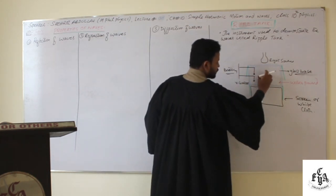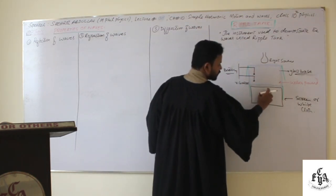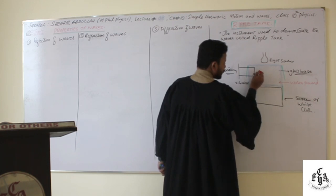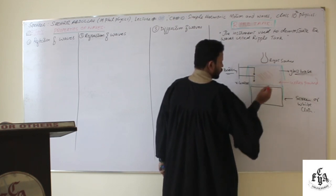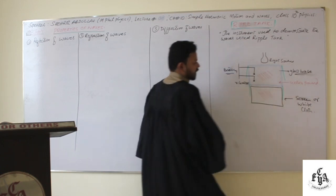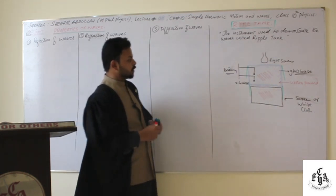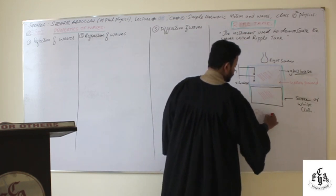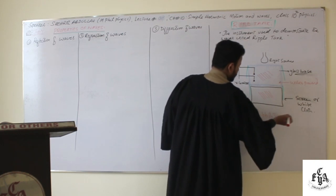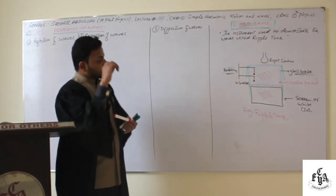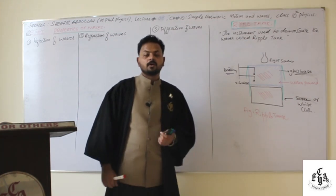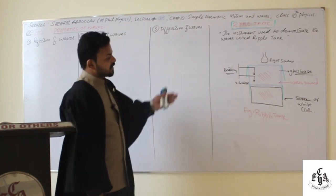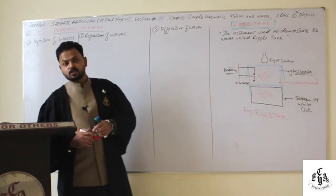The image of the generated waves is projected and observed on the screen below. This is how we use the ripple tank. Using the ripple tank, we can demonstrate different properties of waves — reflection, refraction, and diffraction — let's discuss them one by one.